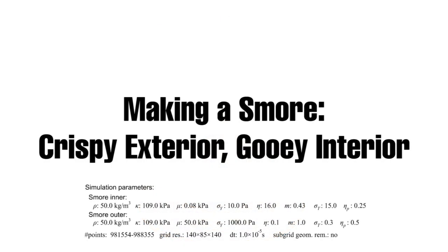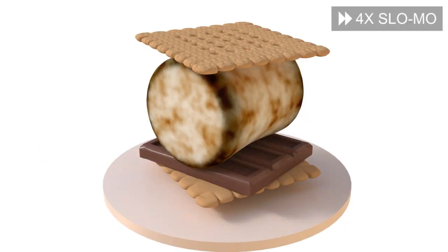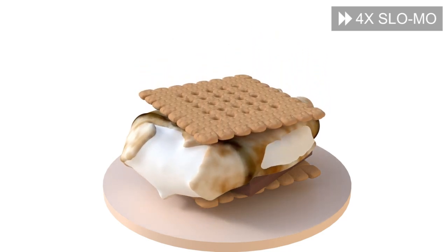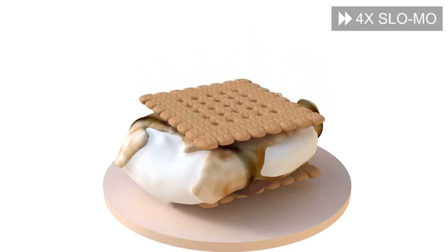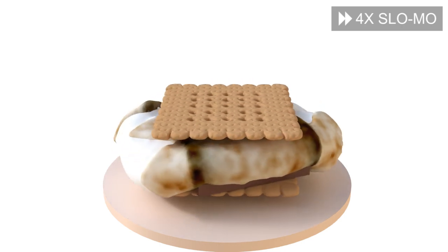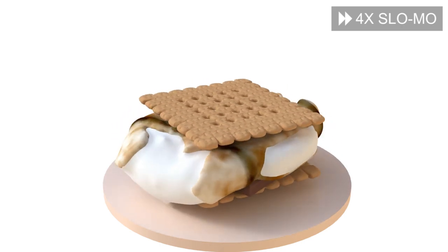This example mimics a roasted marshmallow, where a stiff outer layer approximates the crispy exterior and a soft inner layer approximates the molten marshmallow core. After a critical amount of compression, the outer layer cracks, allowing the soft inner layer to flow outwards.